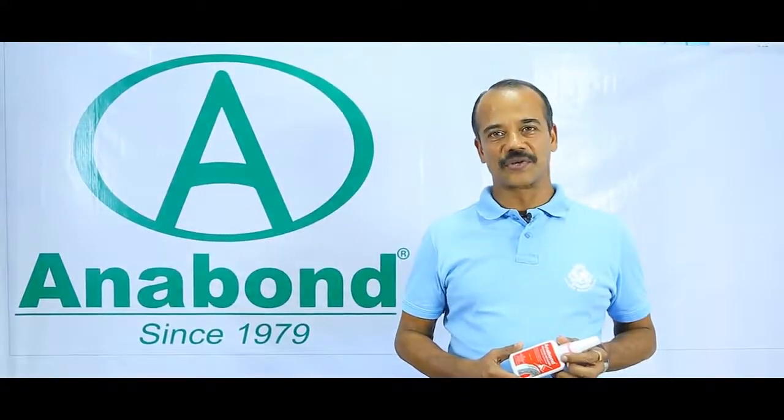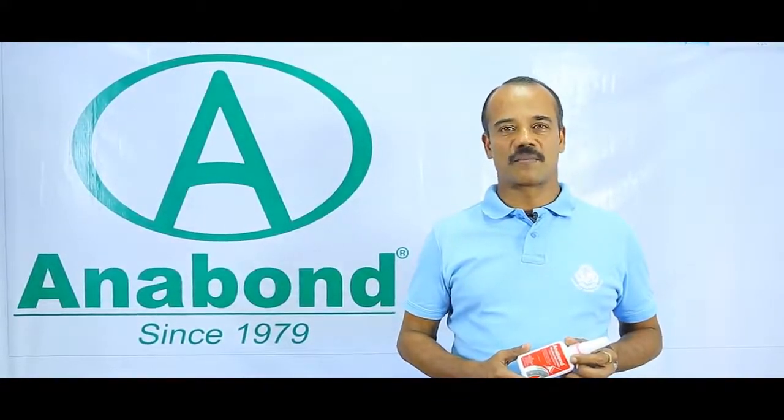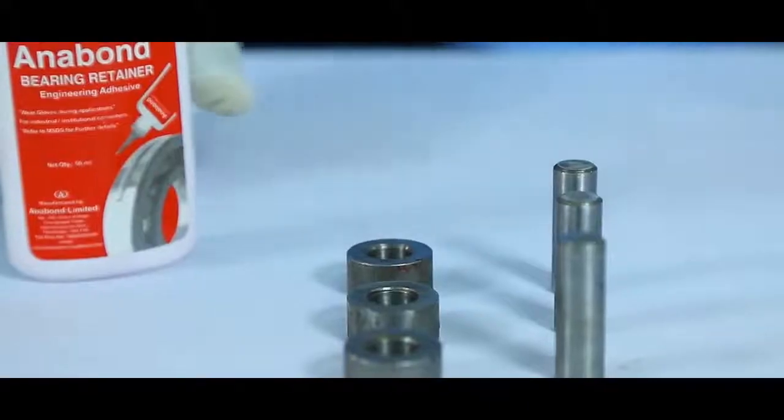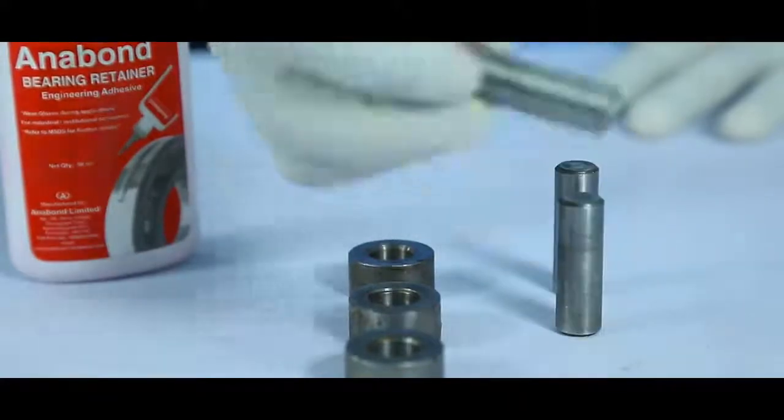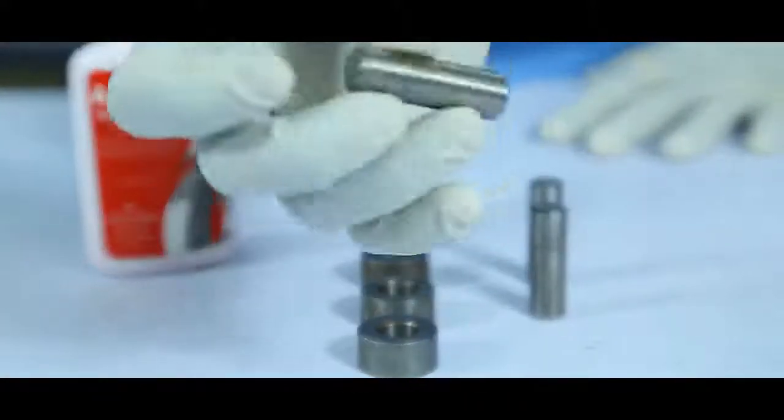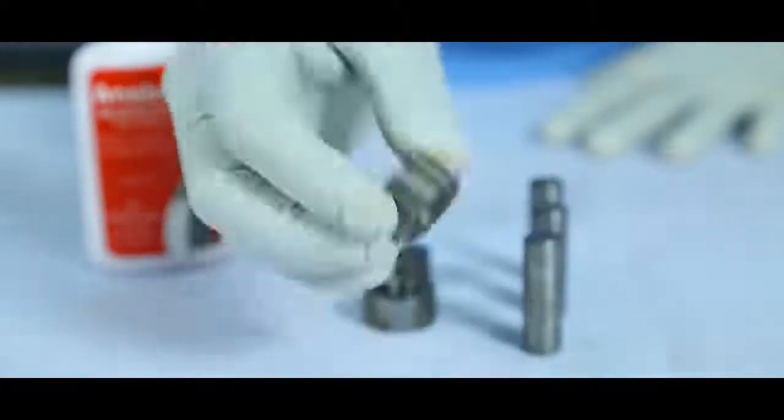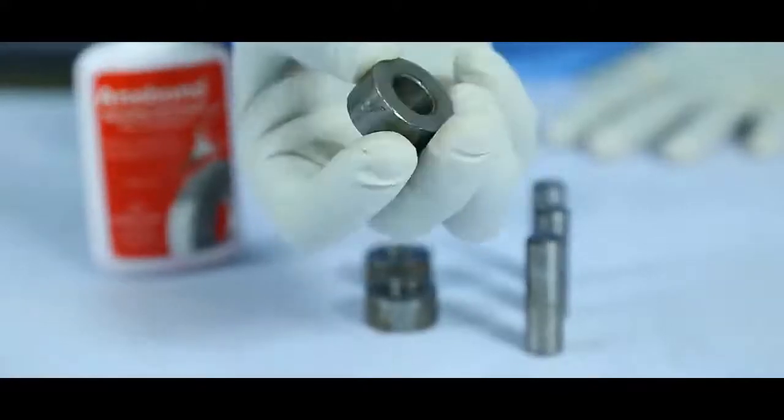Let me show you how to use Anabond anaerobic bearing retainers. We will use Anabond 412 on these pin and bush. This is the pin and here we have the bushes. These will be bonded using Anabond 412.